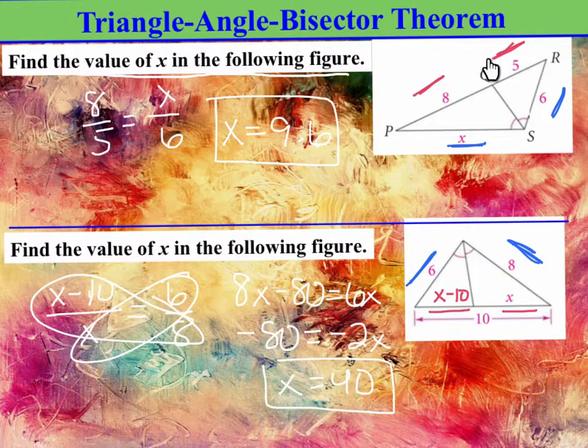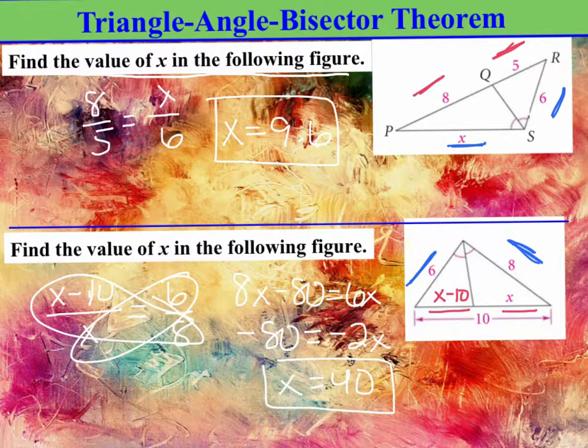I went ahead and color-coded the sides that are proportional to the other two sides. So we would do 8 over 5 is equal to X over 6, and then you solve by cross-multiplying, so X equals 9.6.